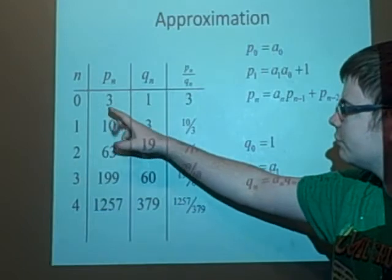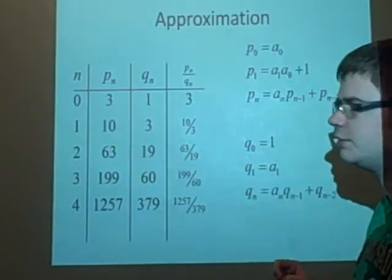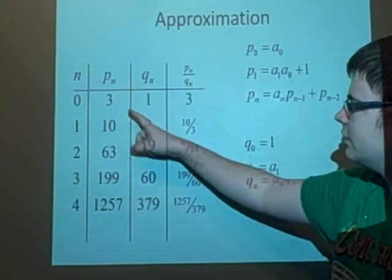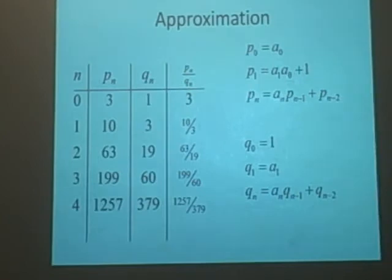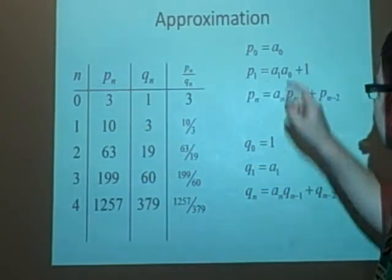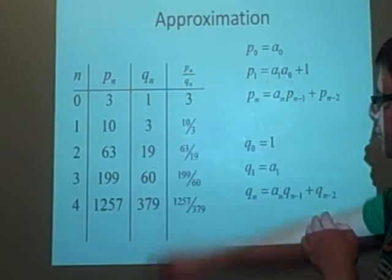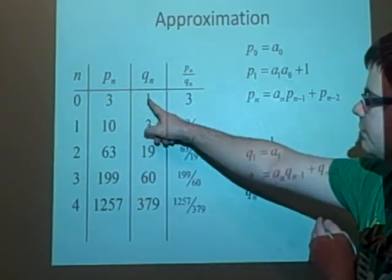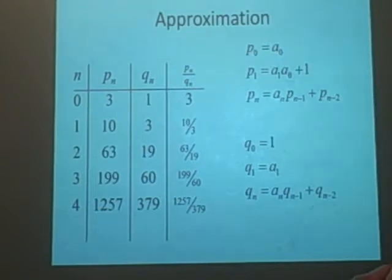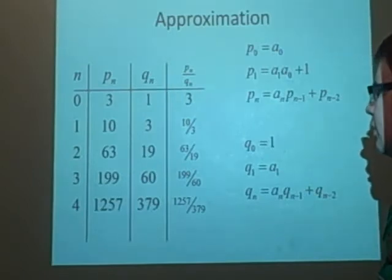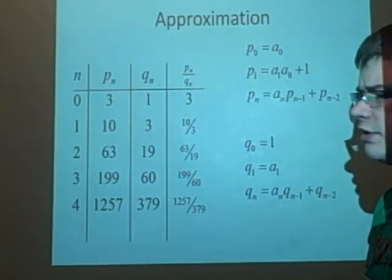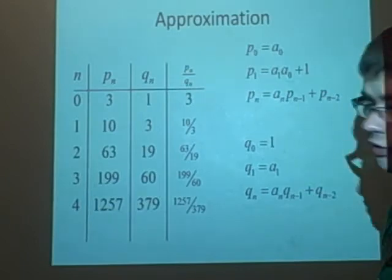Then we do it again, so now we've got 3 times a1, which is 3, plus 1, which gives us 10. So 3 times 3 plus 1 gives us 10. This one here, we've got 3 times this one, which is 3. And then we can do 10 divided by 3, which is 10 over 3. That's 3 and a third, which we're getting closer to it, because it's 3.3 something.